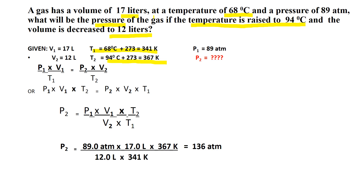Substitute all the given values into the equation for P2. Cancel the common units — liters cancels with liters, Kelvin cancels with Kelvin — and the resulting unit is atmospheres. The calculation is 89.0 times 17.0 times 367 divided by 12.0 divided by 341, which equals 136 atmospheres. This is your final answer.